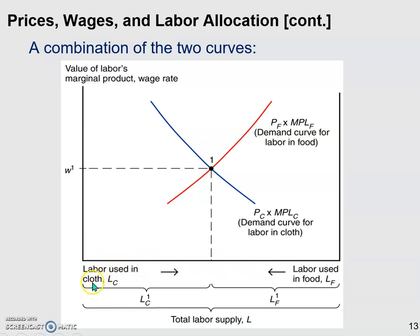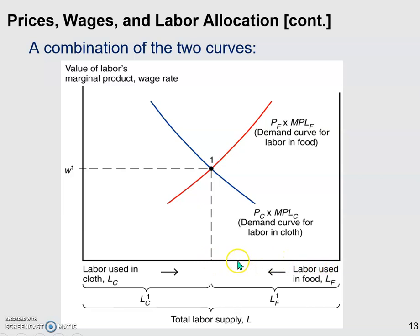Because we flipped the labor demand curve in food, that's why you see this red curve here. You may think it looks like it's upward sloping, but it's actually not, because you're supposed to refer to the right vertical axis. The horizontal axis is the amount of labor employed in food, but remember, the origin is on the right. So when we move towards the left, that means more labor is employed in the food industry. From right to left, the red curve is still downward sloping.